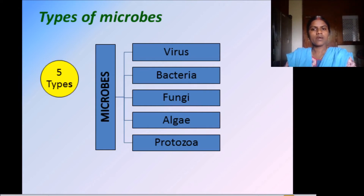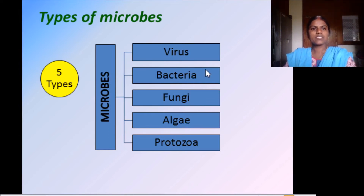What do you mean by microbes? Microbes are otherwise called microorganisms. There are five types: virus, bacteria, fungi, algae, and protozoa. Let us see them one by one.